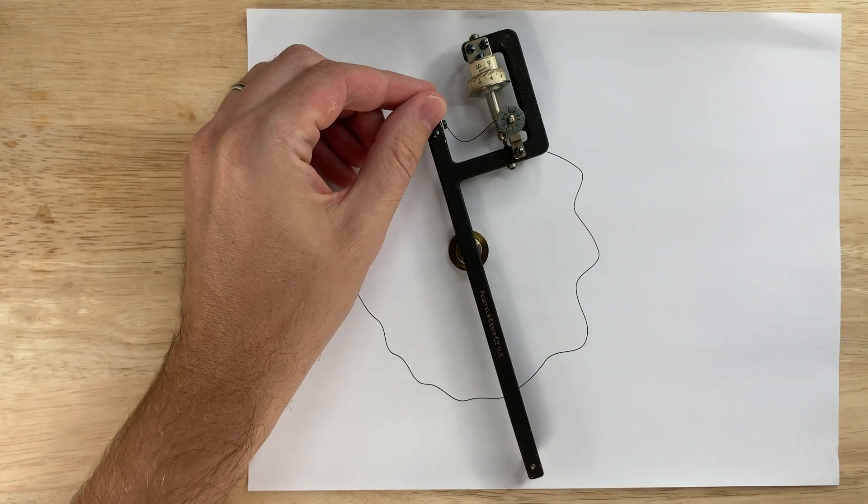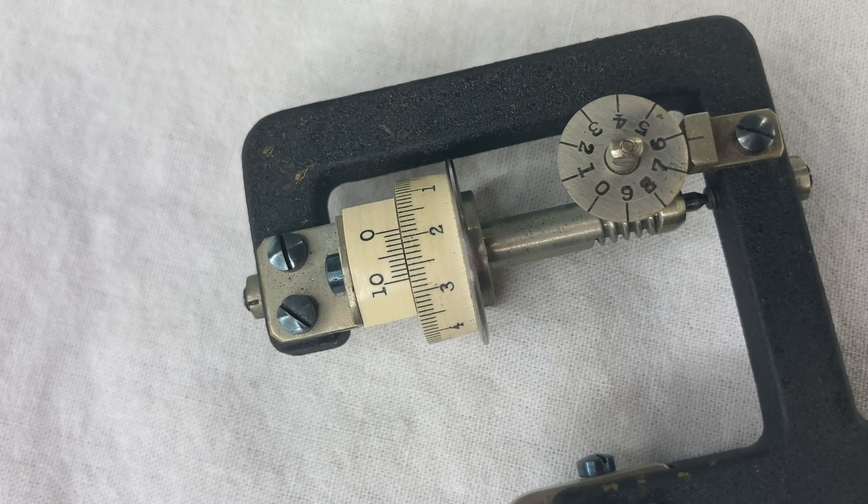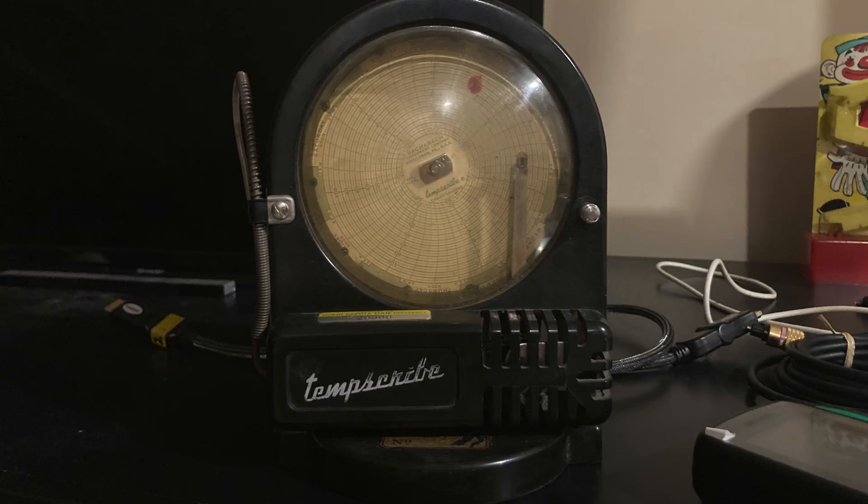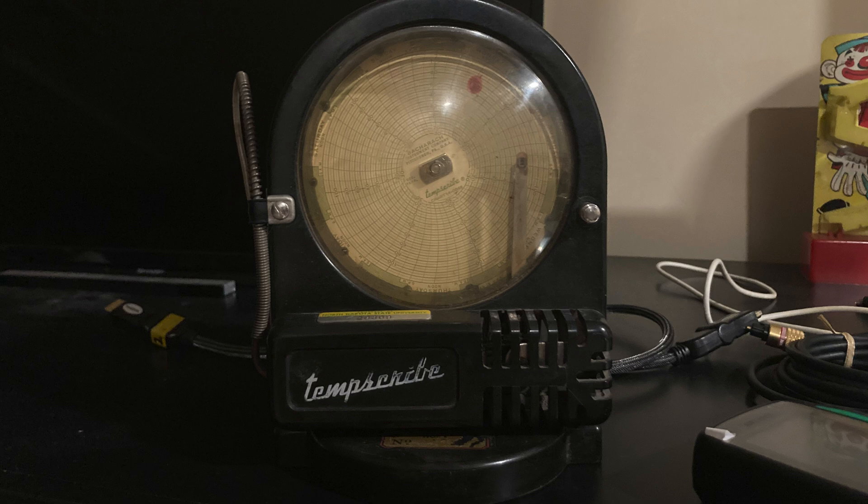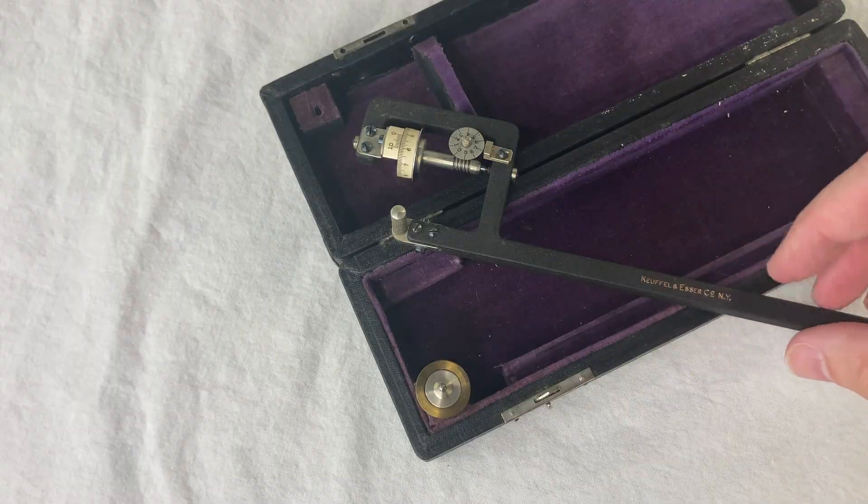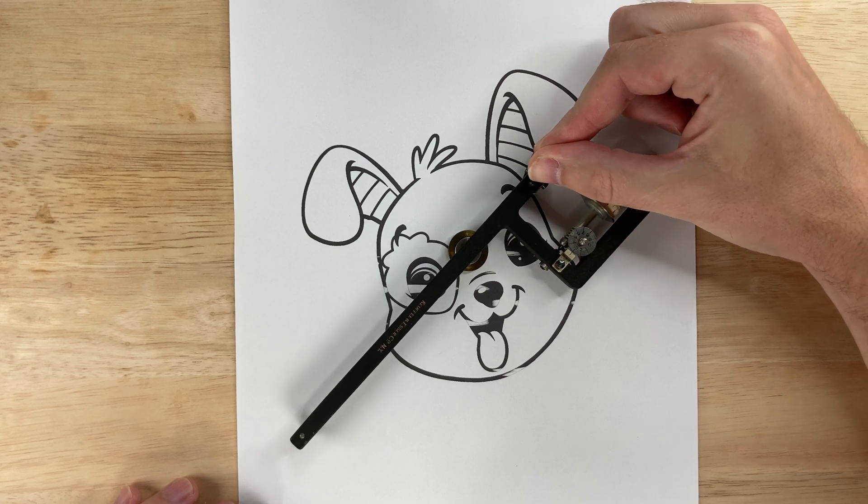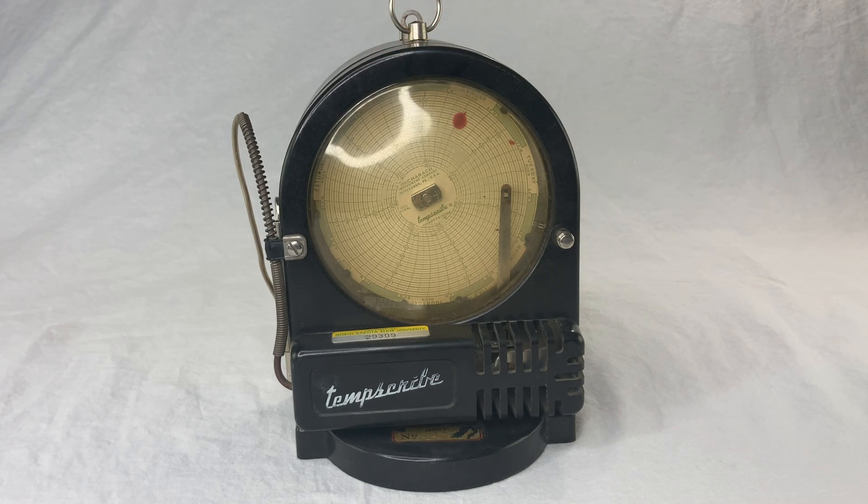You know most of my videos are about old forgotten things that you use to do stuff. This here is an old forgotten thing that you use to help you use this other old forgotten thing. This exists because this exists. And this makes round charts. If these things made straight charts instead then we wouldn't need this. But they made round charts so we do need this. And why does it make round charts? Because it's a wind up clock thing. And I guess that was the simplest way to do it. It's a Rube Goldberg assemblage of technologies that only makes sense when used together in this specific way. It's a shame really to present the radial planimeter all alone like this. So I'm very pleased to announce my first ever direct sequel video. Stay tuned.